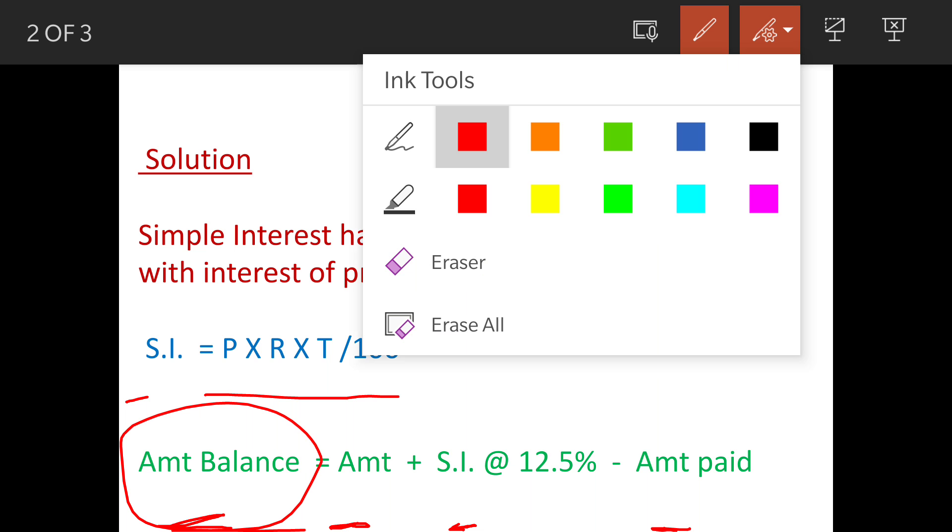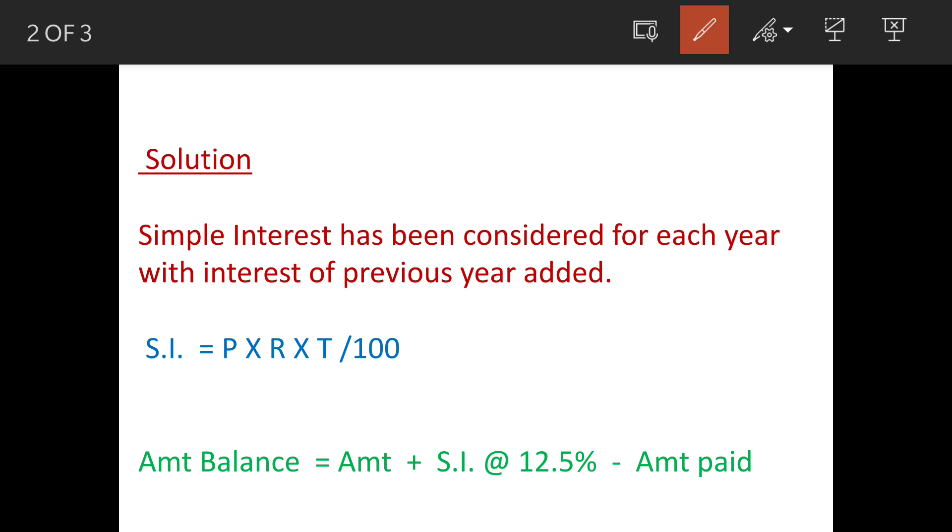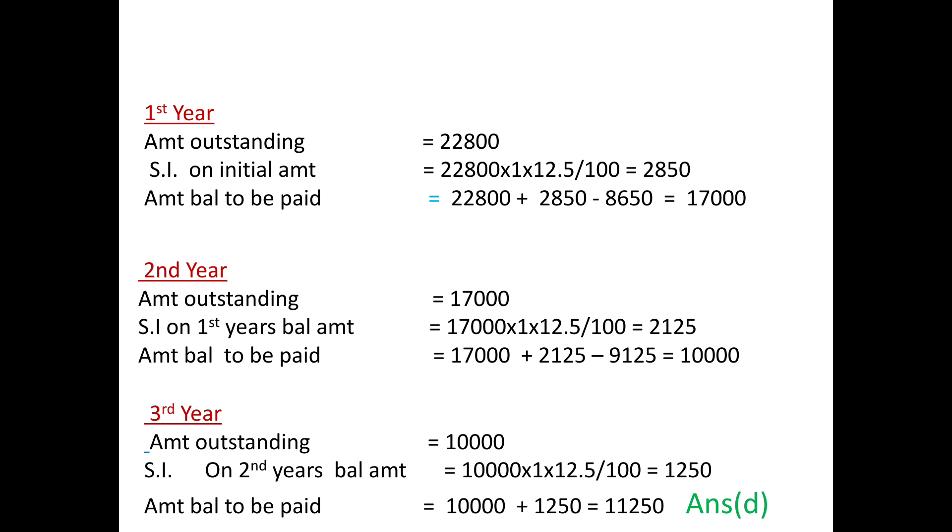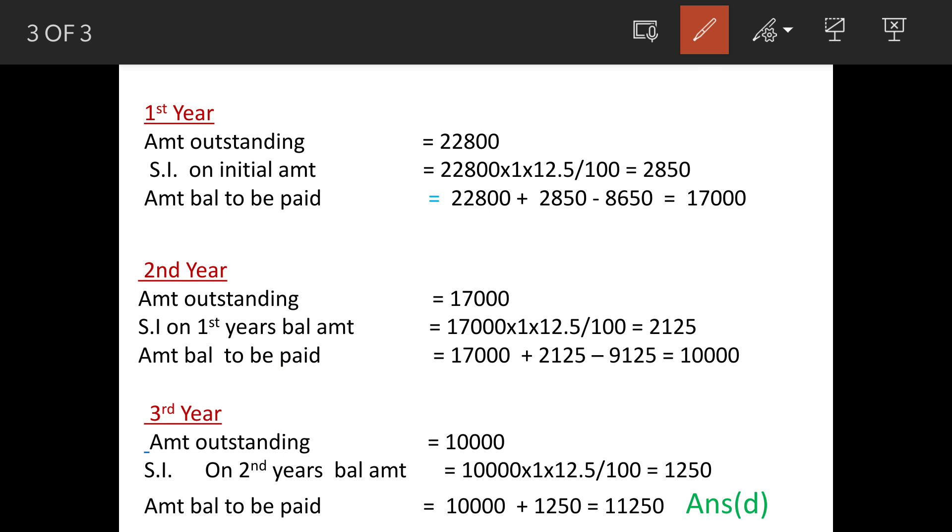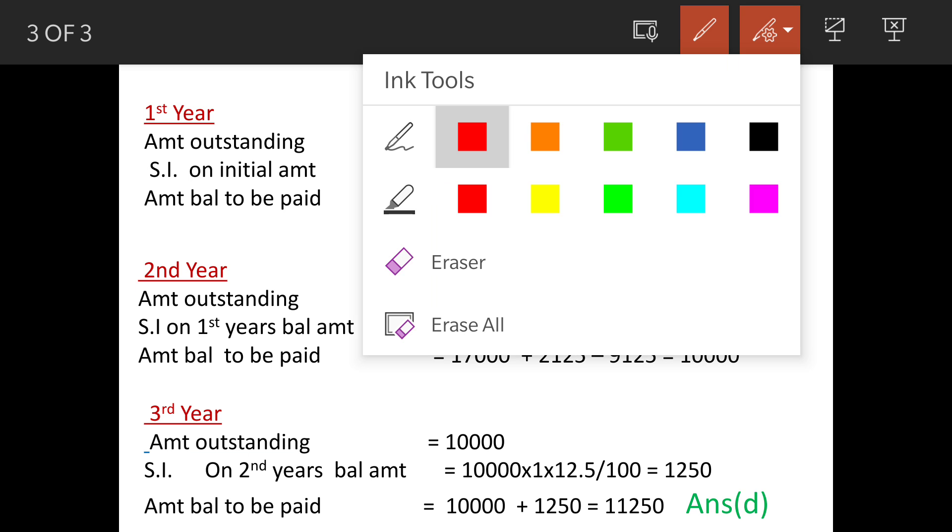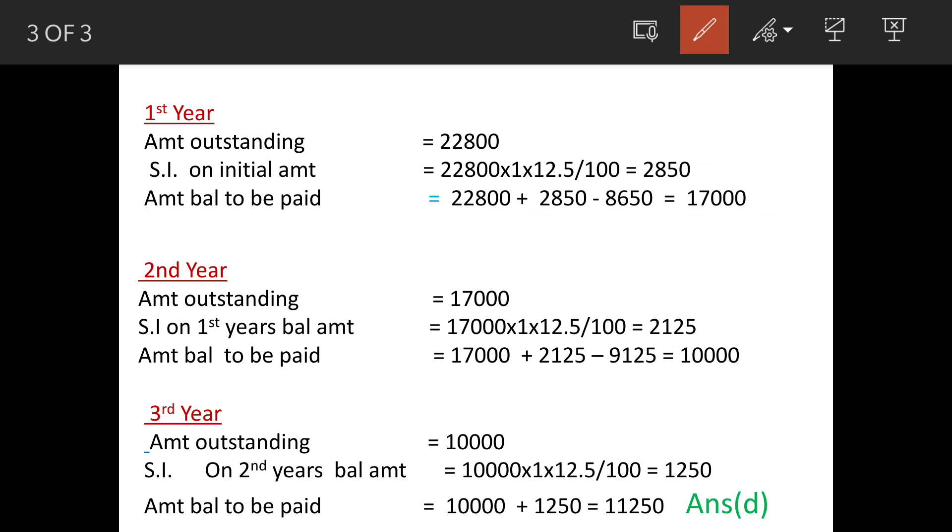First year, the amount is 22,800. Interest will be 22,800, period is one year, rate is 12.5 divided by 100, which equals 2,850. So total amount balance at the end of first year will be: